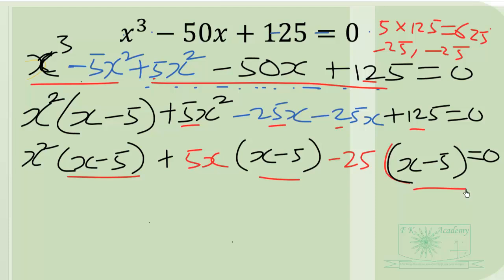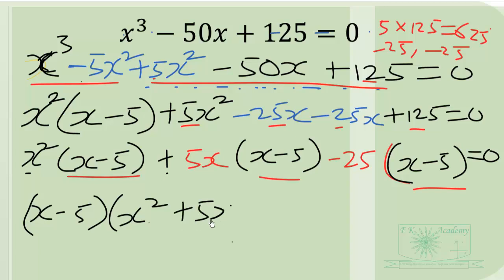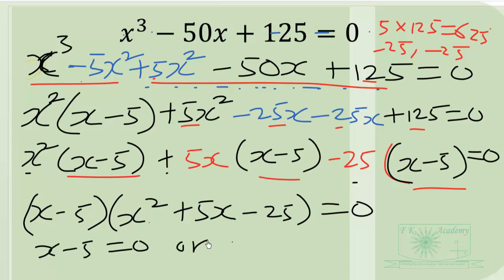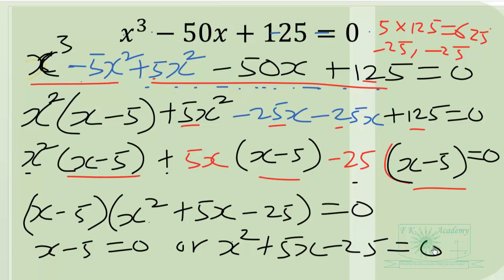We obtain (x minus 5) times (x squared plus 5x minus 25) equals zero. By the zero product principle, either x minus 5 equals zero, or x squared plus 5x minus 25 equals zero.